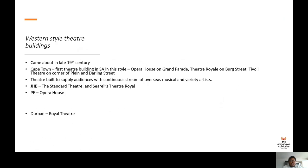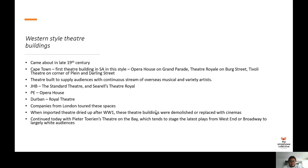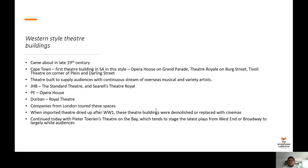Now we'll move on to Western-style theatre buildings. During the late 19th century, many theatre buildings were erected in rapidly growing cities. These theatres copied the latest European trends, including gaslighting, boxes for important theatre-goers, and galleries. In the racially divided colonial period, these theatres were mostly attended by white theatre-goers who wanted the same entertainment available in Europe. Cape Town boasted the first theatre building of this kind in South Africa, acquiring the Opera House on the Grand Parade, the Theatre Royal in Bourg Street, and the Tivoli Theatre, built on the corner of Plain and Darling Street.